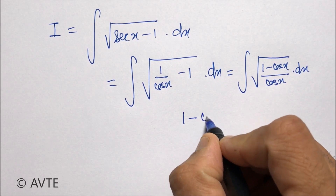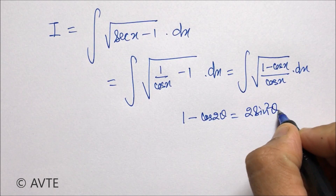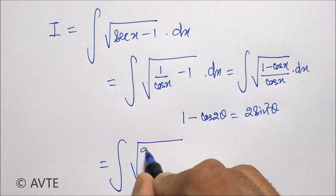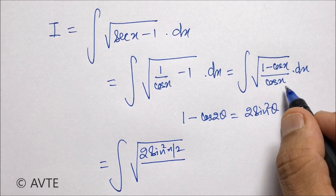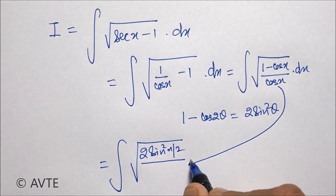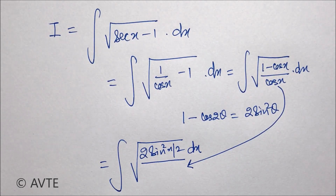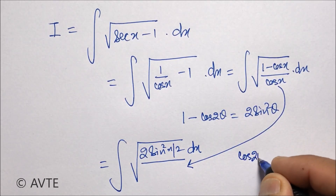Using the identity 1 − cos 2θ = 2sin²θ, the numerator is expressed in half-angle form. For the denominator, since we ultimately get sine after cancellation of the square root, it is very important to get the same angle in cosine. So we apply cos 2θ.